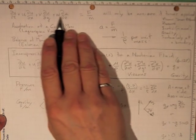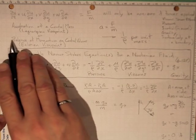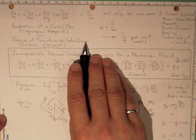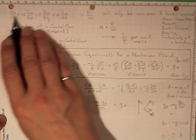So here we are. This is the acceleration of a control mass from a Lagrangian viewpoint, or it's the balance of momentum on the control volume from an Eulerian viewpoint.